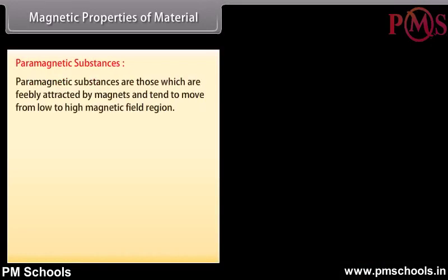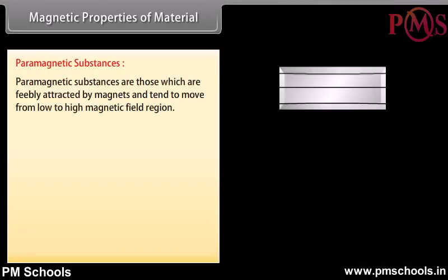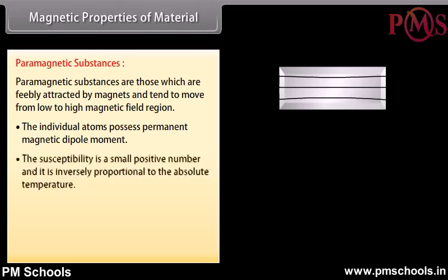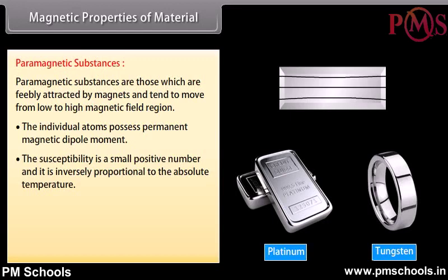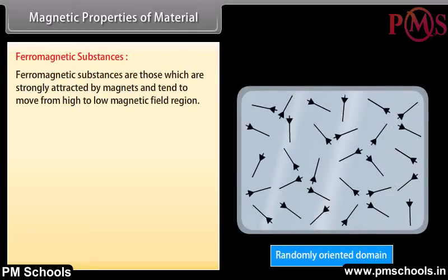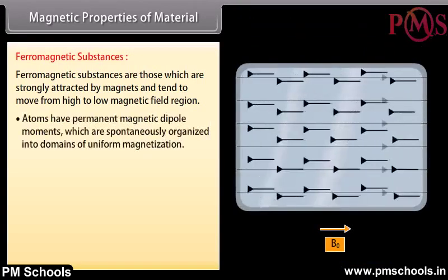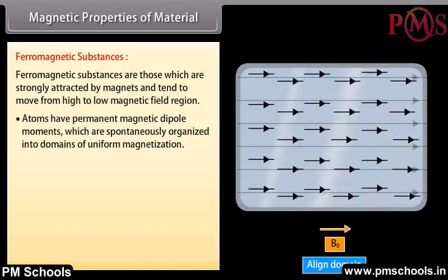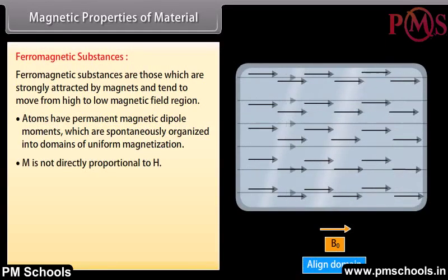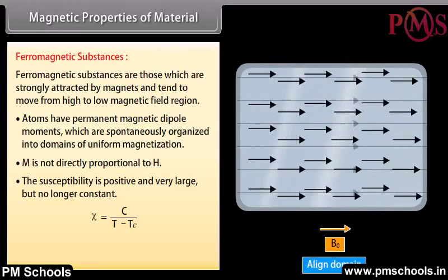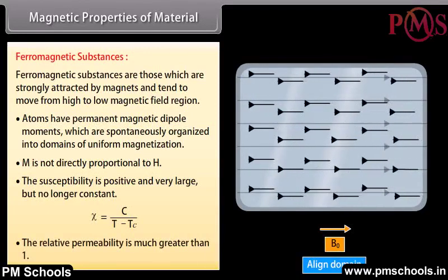Paramagnetic substances are feebly attracted by magnets and tend to move from low to high magnetic field regions. Their individual atoms possess permanent magnetic dipole moments. The susceptibility is a small positive number inversely proportional to absolute temperature: χ = C/T. The relative permeability is slightly greater than 1. Ferromagnetic substances are strongly attracted by magnets. Their atoms have permanent magnetic dipole moments spontaneously organized into domains. M is not directly proportional to H; susceptibility χ = C/(T − Tc) is positive and very large. The relative permeability is much greater than 1.